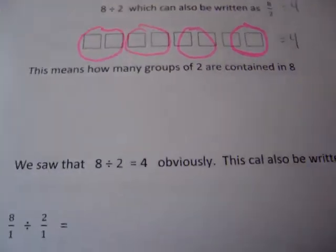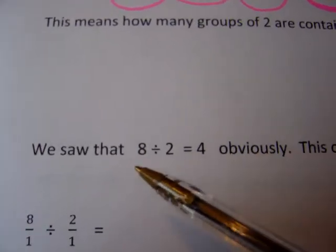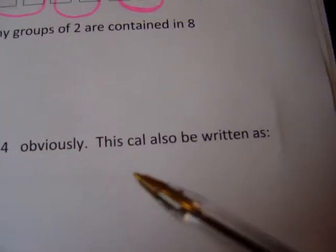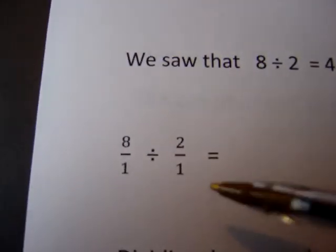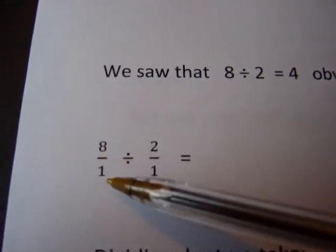Now, 8 divided by 2 equals 4 can also be written as 8 over 1 divided by 2 over 1. I just wanted to express our whole numbers 8 and 2 as fractions. Anytime you put a whole number over 1, it just means one whole. We have 8 wholes divided by 2 wholes.